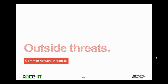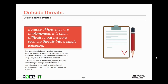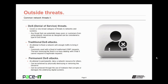I'm going to begin by talking about outside threats. Because of how they are implemented, it is often difficult to put network security threats into a single category. Many attempts to breach a network combine different aspects of different threats. For example, a man-in-the-middle attack is often combined with some type of spoofing. That means security requires more than just a single line of defense. Good administrators recognize this and implement multiple layers of security in order to harden and protect their systems.